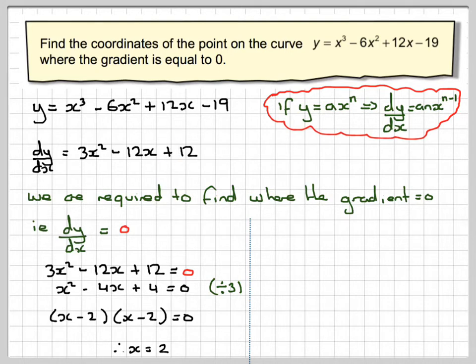Now we need to find the y-coordinate. So when x is equal to 2, y will be equal to 2 cubed minus 6 times 2 squared plus 12 times 2 minus 19. 2 cubed is equal to 8. 2 squared is 4. 6 times 4 is 12. So it's minus 24 plus 12 times 2, which is plus 24, minus 19.